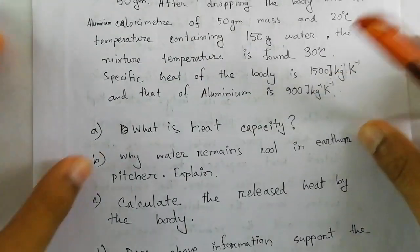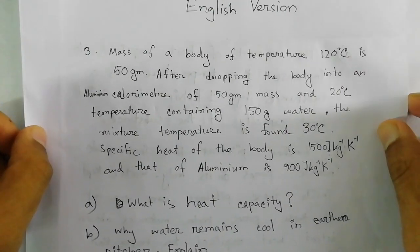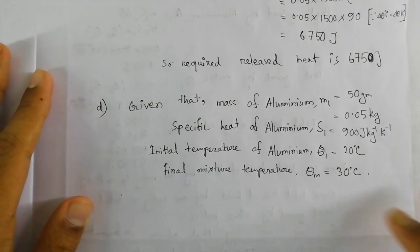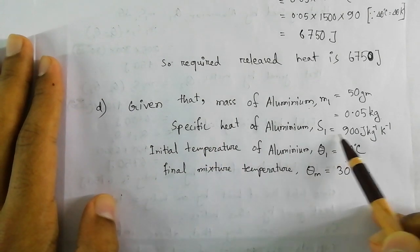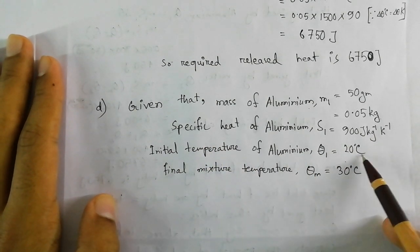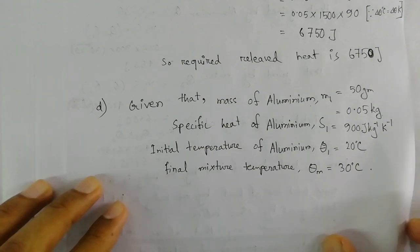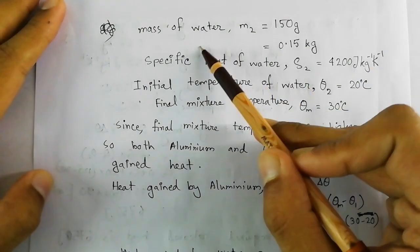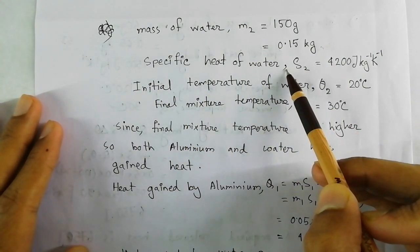The last question asks whether the given information supports the principle of calorimetry — we have to show this mathematically. We first write the data for aluminium: the mass is given and converted into kilograms, the specific heat of aluminium is given in the stem, the initial temperature is given, and the final mixture temperature is the final temperature for all bodies since the system is in equilibrium. Then we list the data for water: mass converted to kilograms for SI units, and specific heat noted.